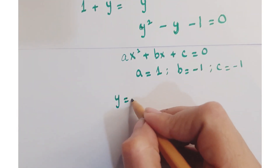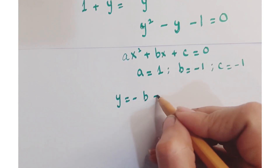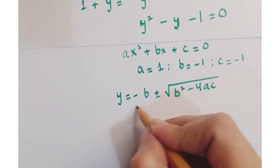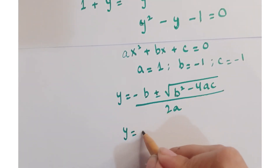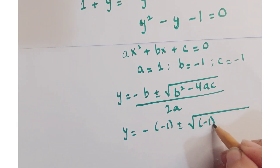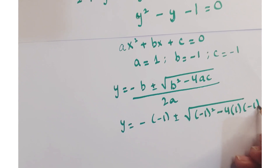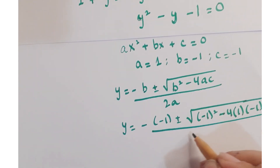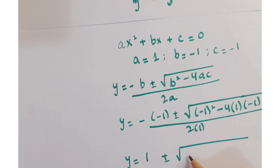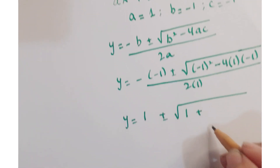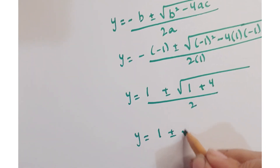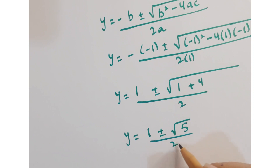Now putting the values into the quadratic formula: (minus b plus or minus the square root of b squared minus 4ac) upon 2a. So we have minus of minus 1, plus or minus the square root of (minus 1) squared minus 4 times 1 times minus 1, all upon 2 times 1. So y equals (1 plus or minus the square root of 1 plus 4) upon 2, which gives y equals (1 plus or minus root 5) upon 2.